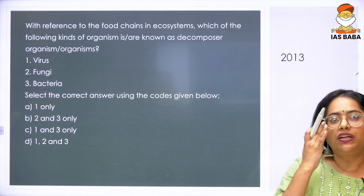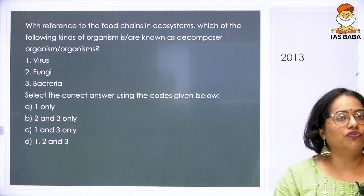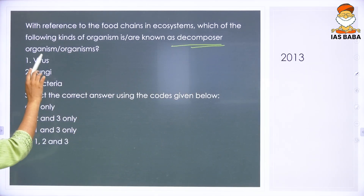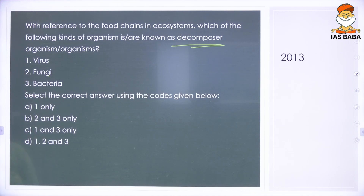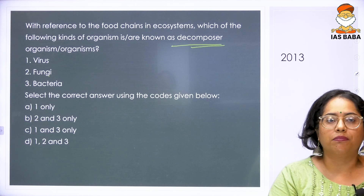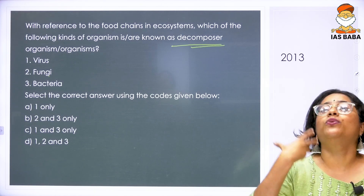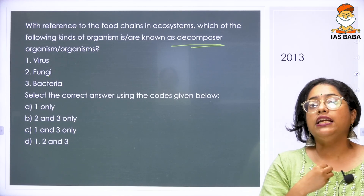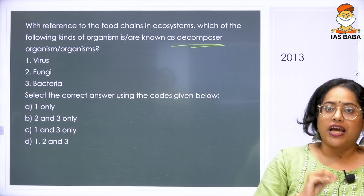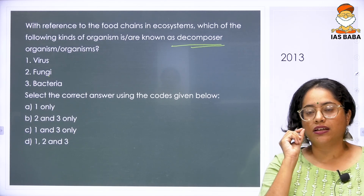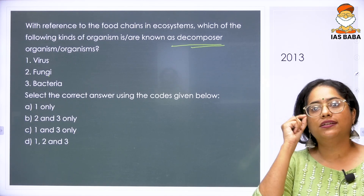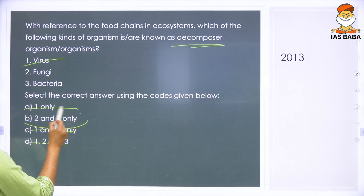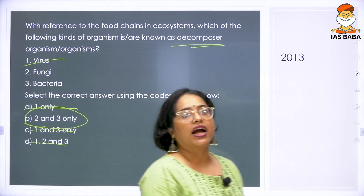We have a 2013 question: with reference to food chains in ecosystems, which of the following organisms are known as decomposers — virus, fungi, or bacteria? Fungi and bacteria are very commonly known as decomposers. Virus will not act as a decomposer because, to even be active and be a living organism, it needs to be in contact with living matter. When it interacts with a decomposing thing, the virus remains as a crystal itself. So virus is eliminated, and the answer is B — 2 and 3, which is fungi and bacteria.